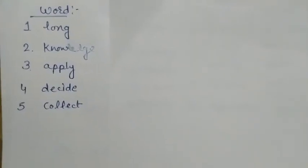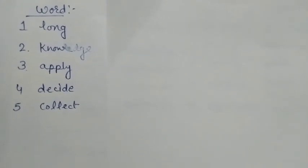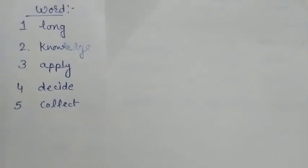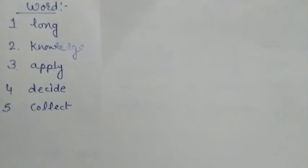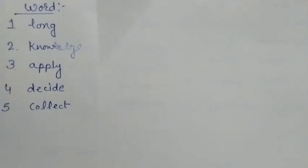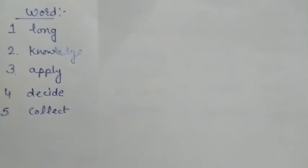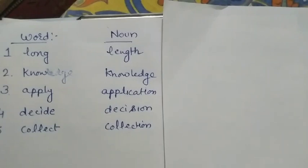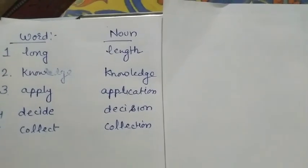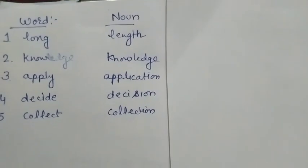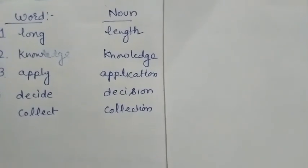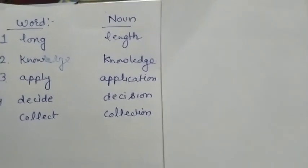Now if you want to continue this topic, you have to know how we can make a noun from a word. For example, the word 'long' - the noun form is 'length.' Know becomes 'knowledge.' Apply becomes 'application.' Decide becomes 'decision.' Collect becomes 'collection.'